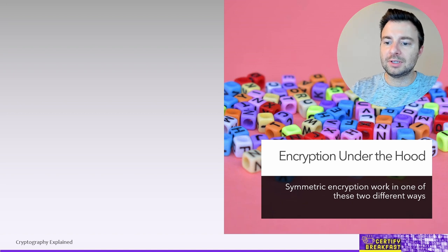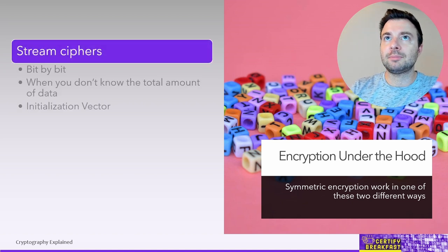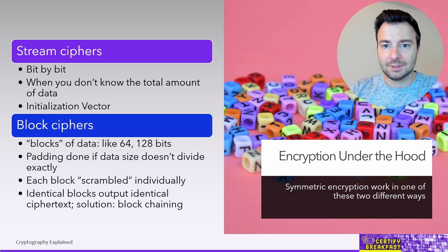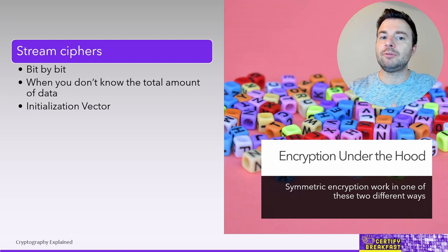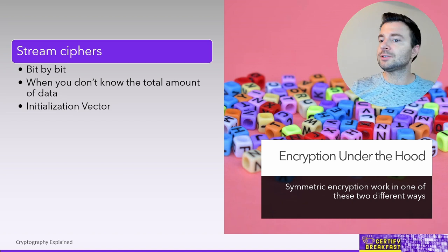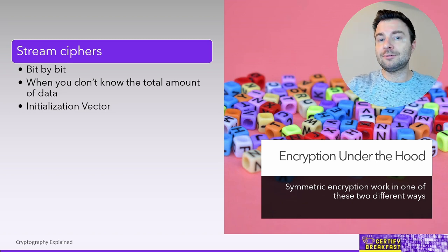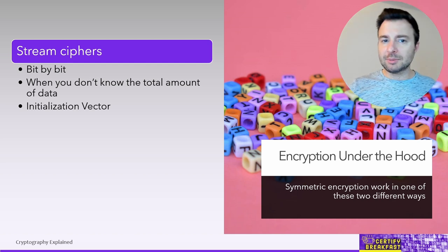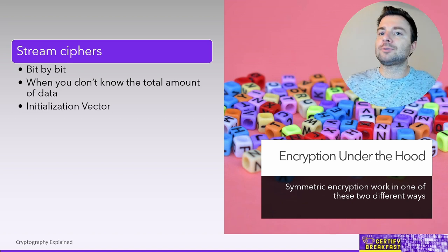How encryption behaves under the hood also depends on the type of data being encrypted, which is why we have two methods: stream ciphers and block ciphers. A stream cipher applies encryption to a constant stream of data, bit by bit. This is what we'd need for streaming traffic — like Netflix traffic or VPN connections, where there's always a constant stream of data passing through that you have to constantly encrypt and decrypt. Since we don't know the exact length of the data to encrypt, unlike a single file on disk, we have to dynamically apply encryption algorithms to all those bits on the fly.